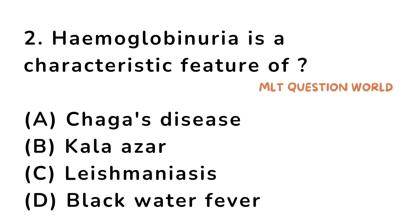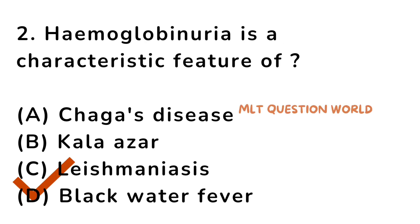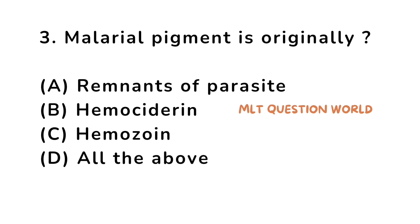Question number 2. Hemoglobinuria is a characteristic feature of: option A. Chagas disease, option B. Kala azar, option C. Leishmaniasis, option D. Blackwater fever. The right answer is option D, Blackwater fever. Hemoglobinuria is a characteristic feature of blackwater fever, which is caused by Plasmodium falciparum.